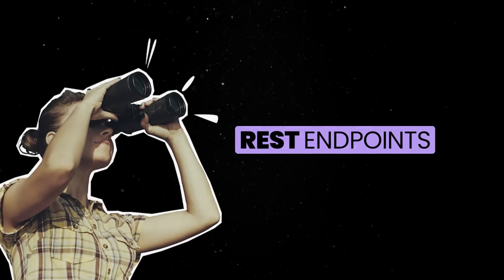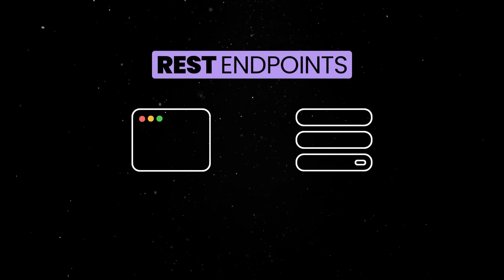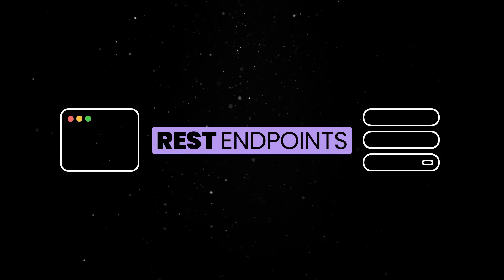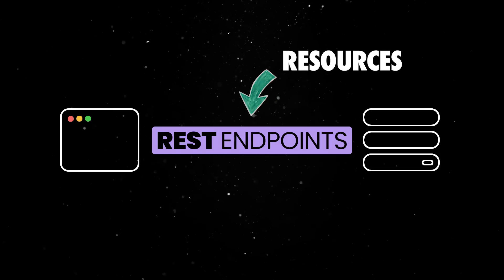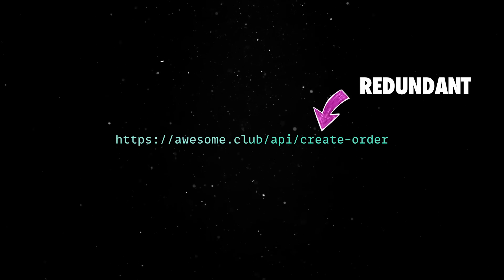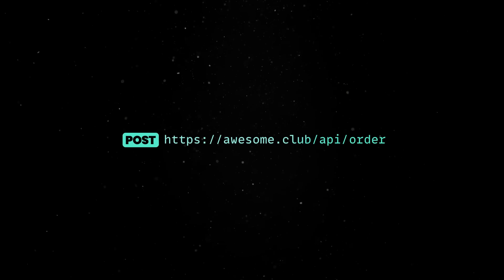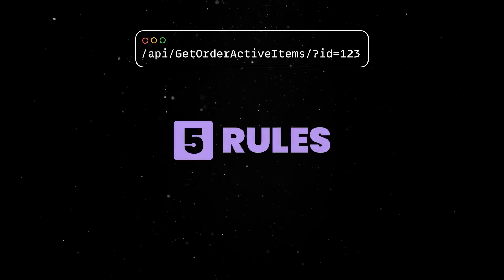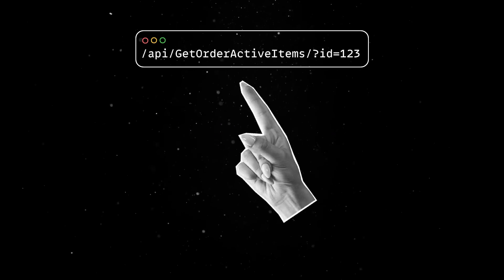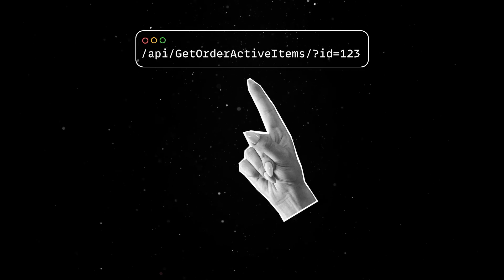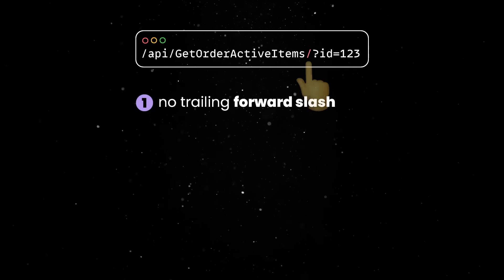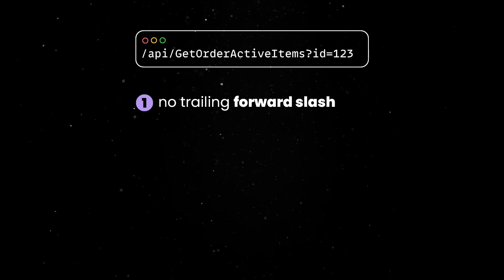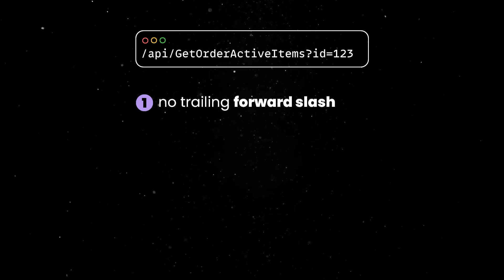Moving to more concrete topics, let's look at REST endpoints. REST enforces a strict separation of concerns between the client and the server, and these endpoints are the channel of communication. Good API design is organized around resources, not actions or verbs. For instance, endpoints like CREATE ORDER should always be avoided, since the CREATE part is redundant if we correctly use HTTP verbs. Let's look at an endpoint that doesn't follow best practices and review five rules you need to follow when designing your API.